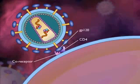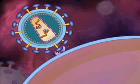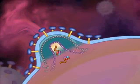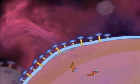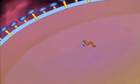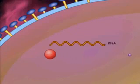In T lymphocytes, the coreceptor is called CXCR4, whereas on macrophages, the coreceptor is called CCR5. After attachment, the viral envelope and host cell membrane fuse, resulting in entry of the virus into the cell.